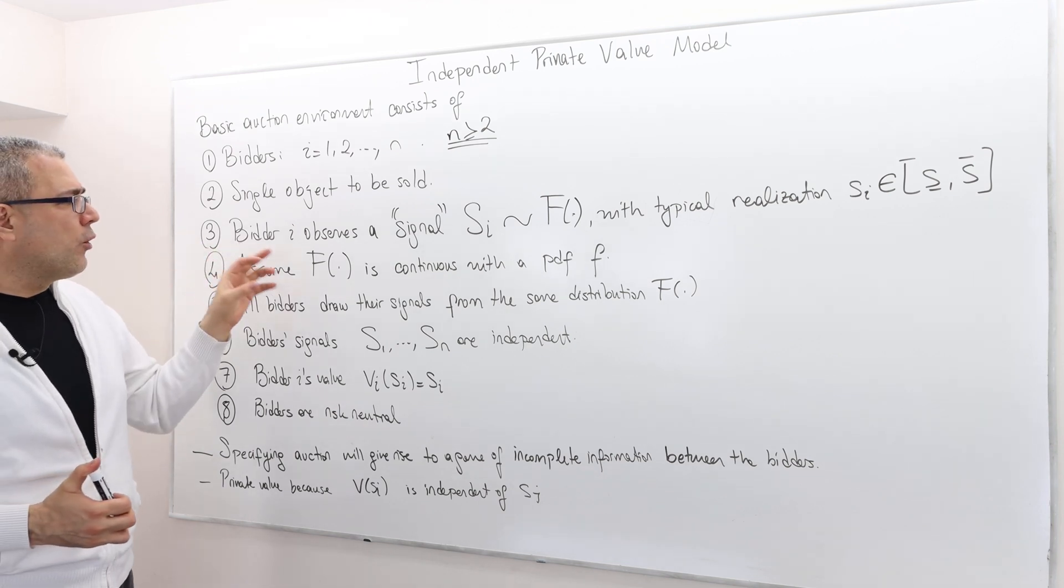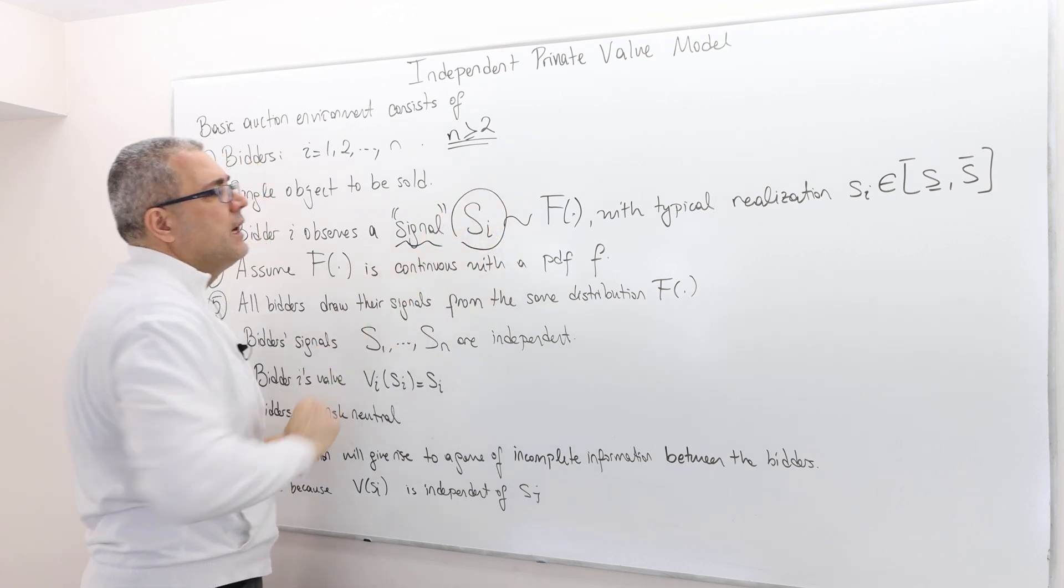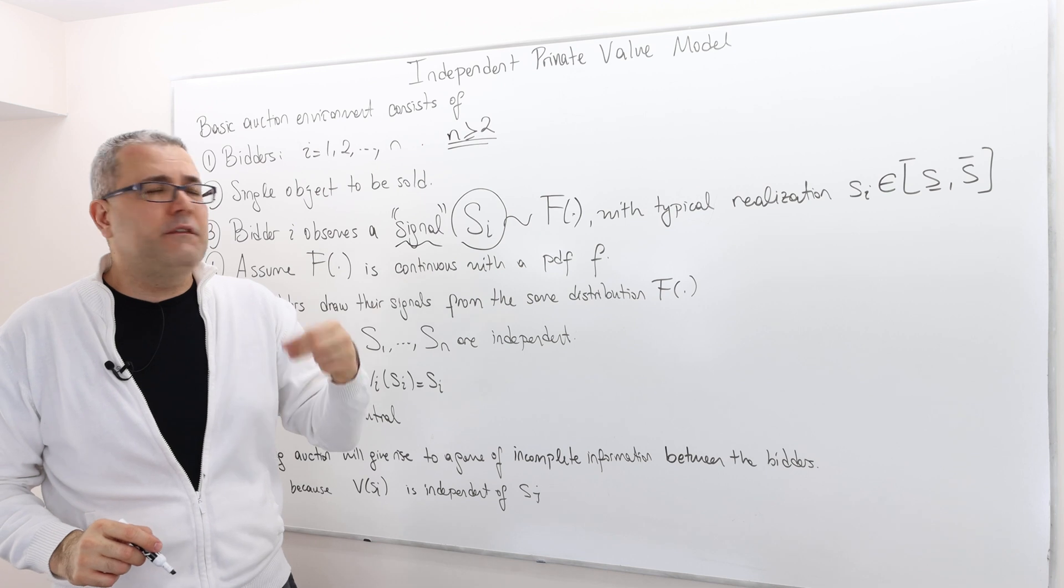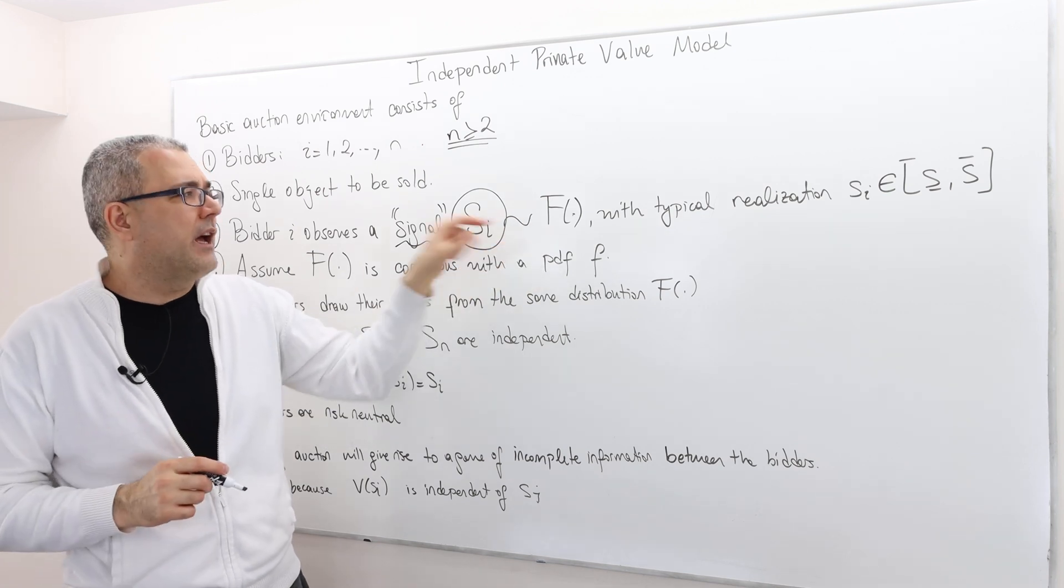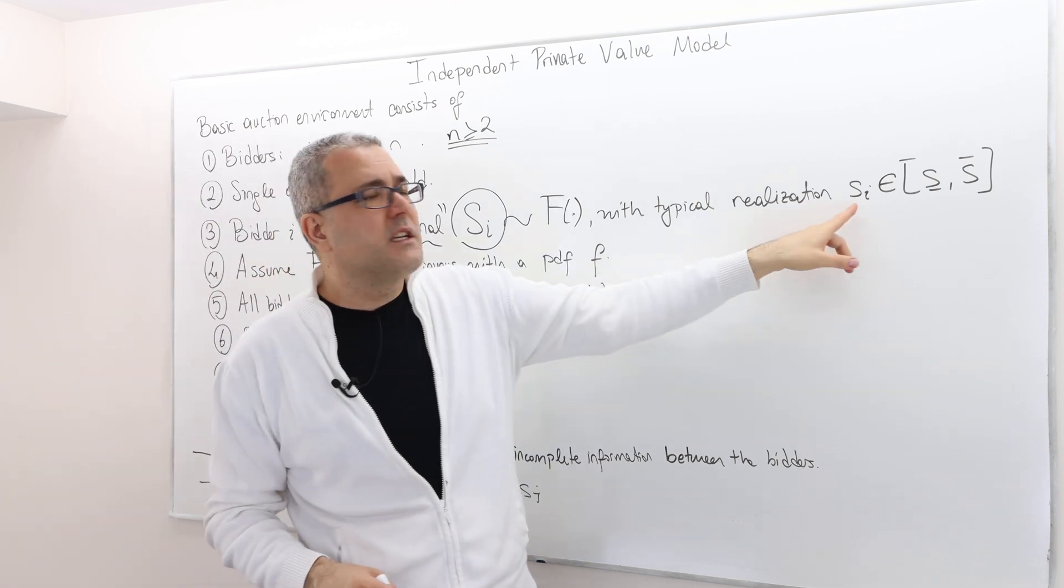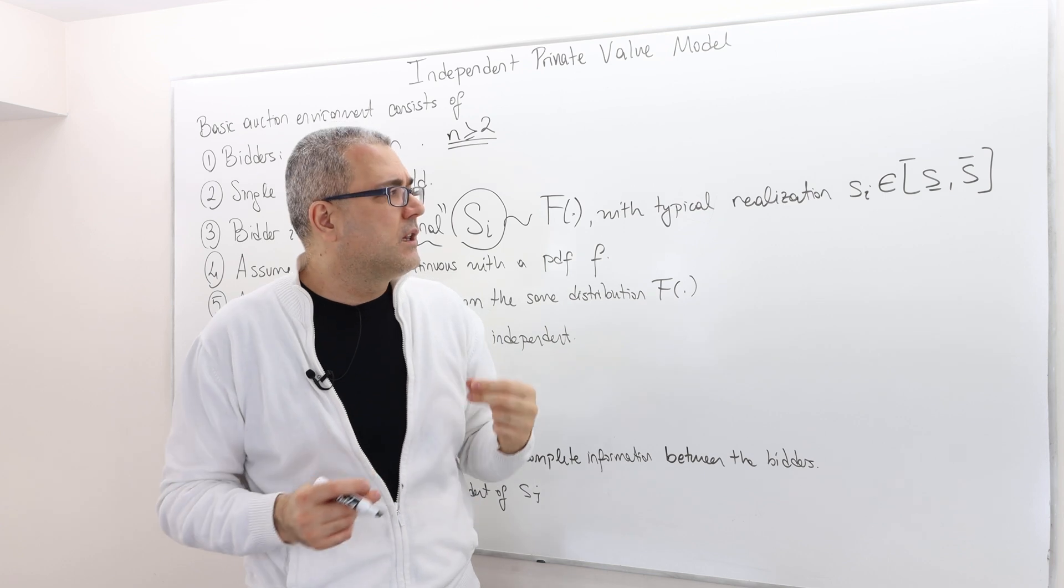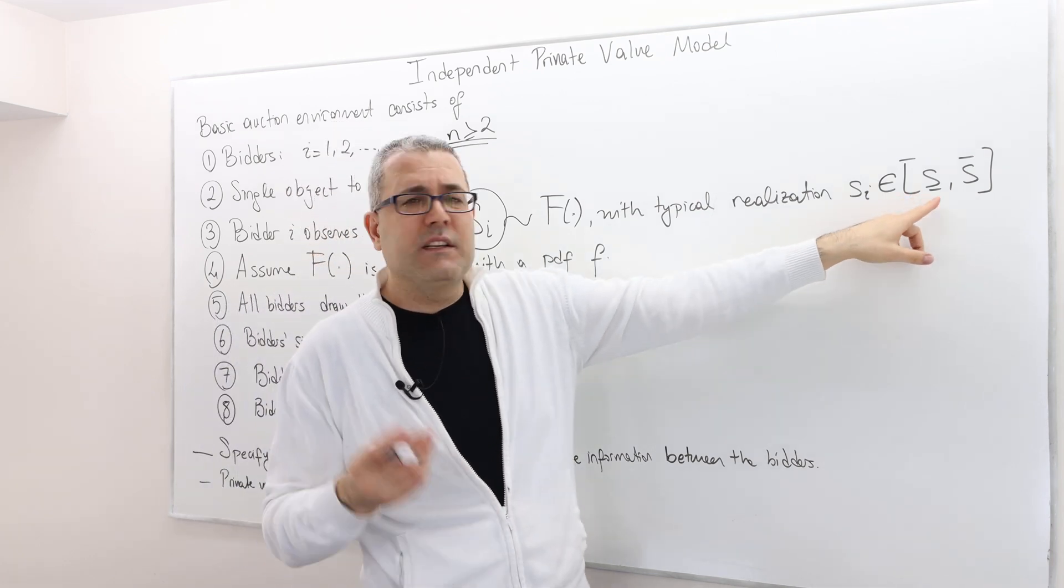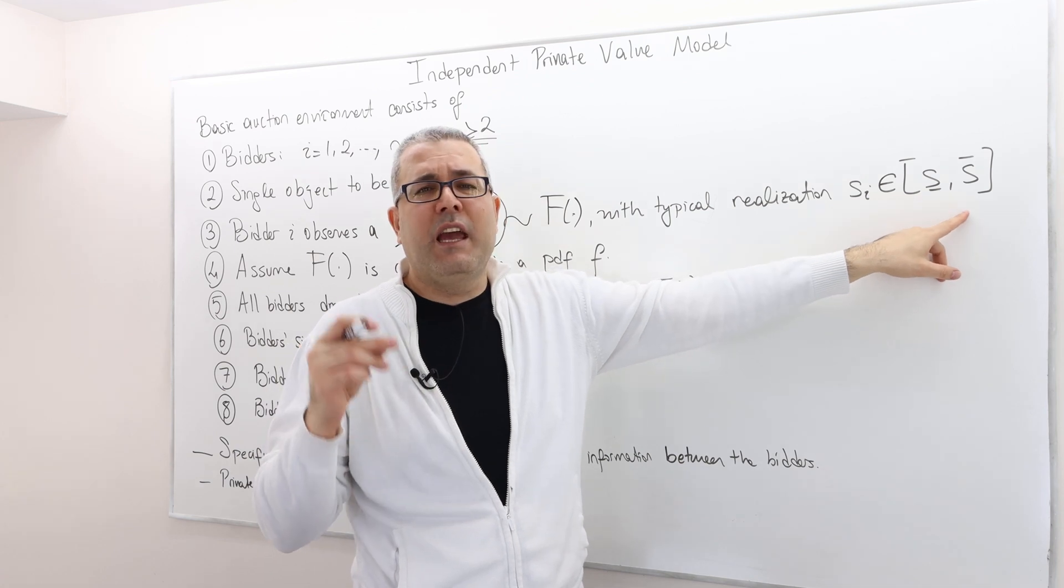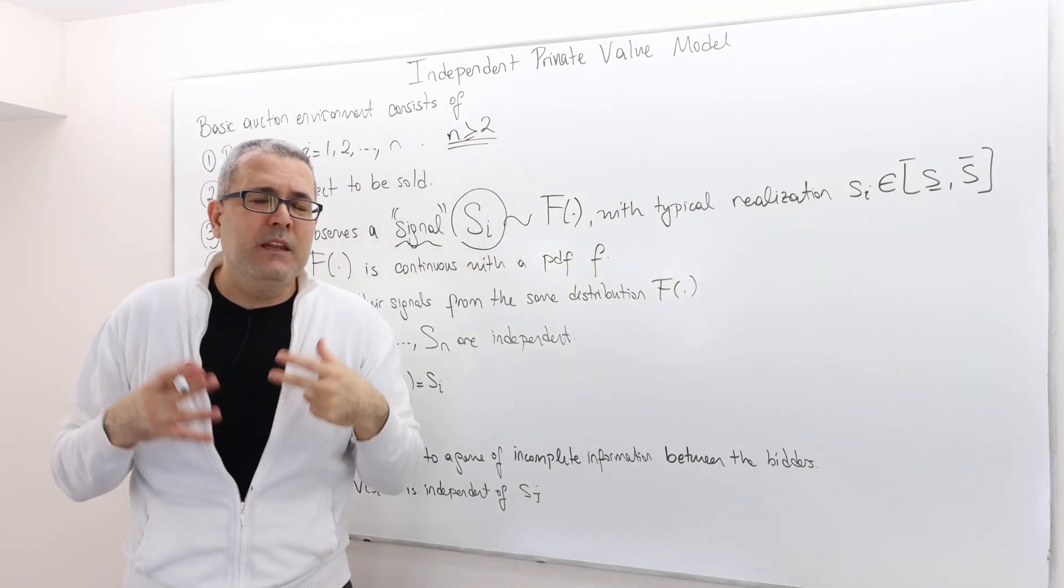What else? Each bidder i observes a signal, si, which is distributed according to a cumulative distribution function capital F with a typical realization small si, which is in this bounded closed interval. The signal can be at least s lower bar and can be at most s upper bar.